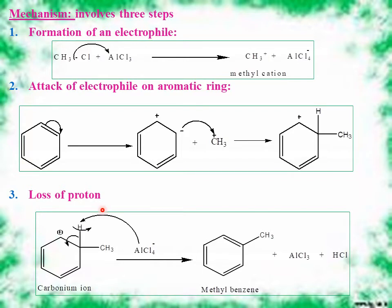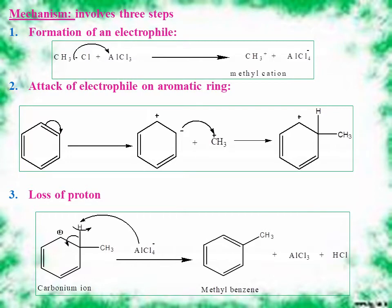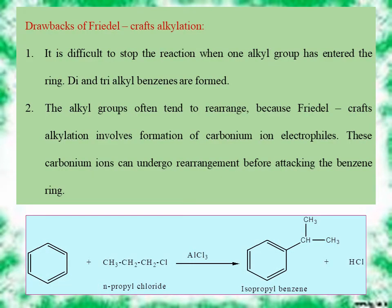In step three, loss of proton occurs. Hydrogen is lost as H⁺ — the bond between carbon and hydrogen shifts between carbon and carbon to stabilize the carbonium ion and restore the aromatic ring system. The proton is taken up by the excess Cl⁻, and finally methyl benzene is formed along with aluminium trichloride and HCl. These are the three steps involved in Friedel-Crafts alkylation.